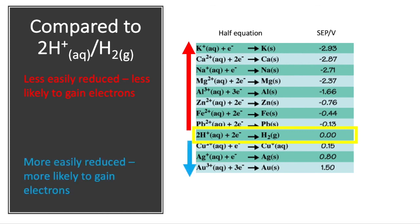And as we go from hydrogen downwards, these metal ions are more easily reduced and are far more likely to gain electrons.